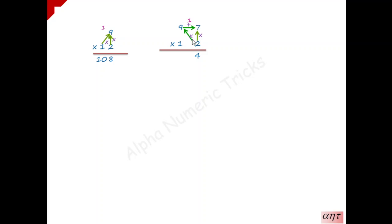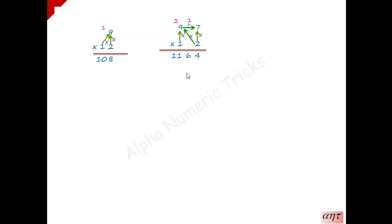So 18 plus 7 is 25, and that is added with carry forward number 1, which gives 26 — 6 is written, 2 is remaining. Now multiply 1 by the last number in the multiplicand, 9, which is 9. 9 plus 2 is 11, which is our final answer. A very simple trick.